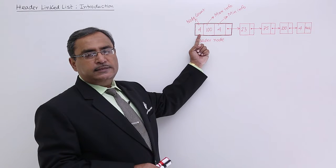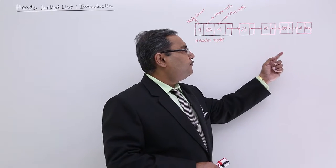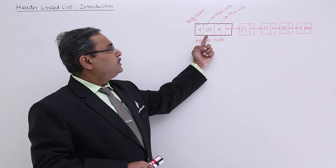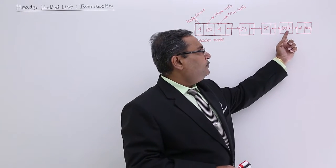The first field is the count of nodes. We have 1, 2, 3, 4 nodes, so I'm putting 4 here. The second field is the maximum info. What is the maximum value? That is 100.